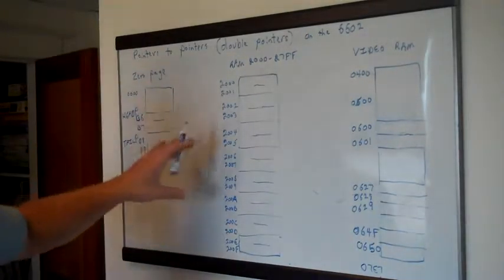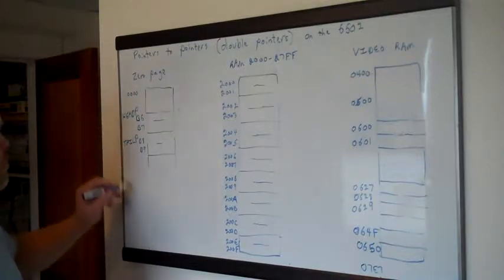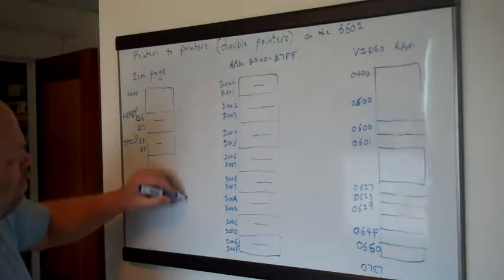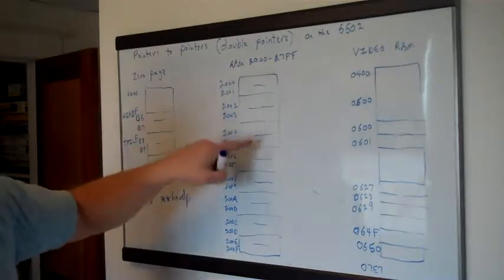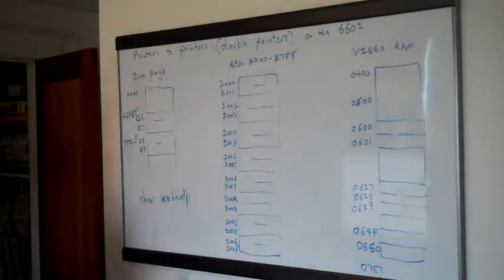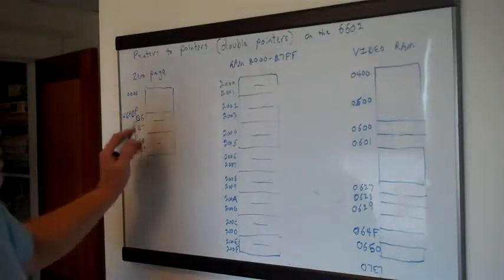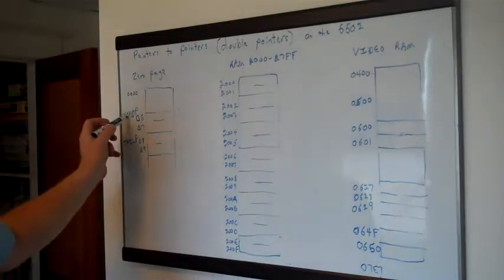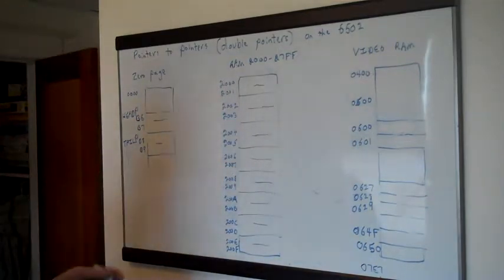That's why we call these pointers to pointers or double pointers — they point to pointers which then point to something else. In C, head P would be defined something like char** head P, meaning it's a pointer to a pointer to a character in memory. We're not dealing with a language like that — we're just doing it with numbers. Both of these are always going to be pointing to a pointer which points to the location of that thing.